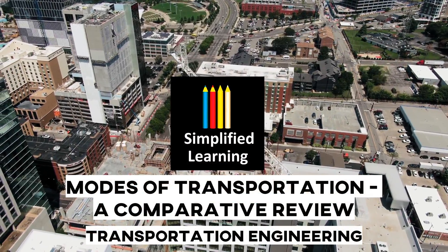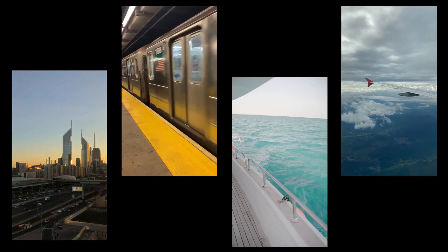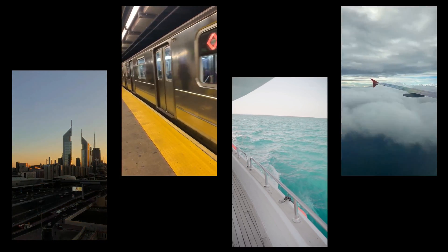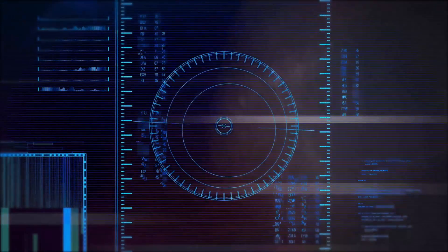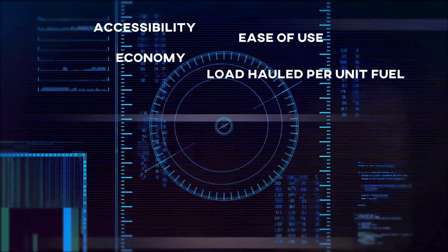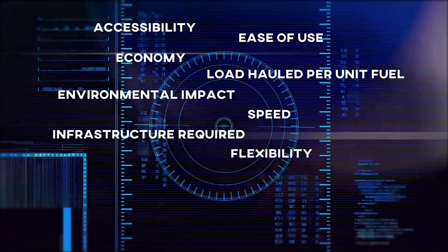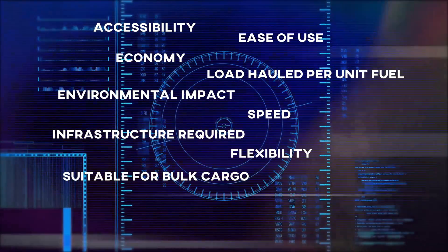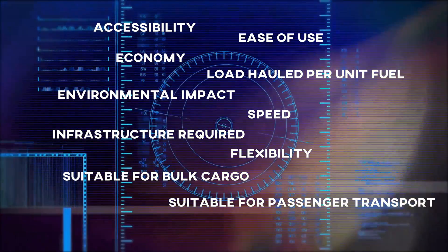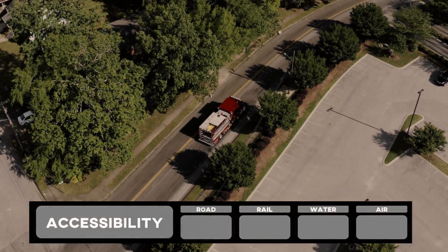Welcome to Simplified Learning. Today we are going to compare four modes of transport: road, rail, water, and air. We will be comparing these modes on the basis of various parameters such as accessibility, ease of use, economy, load hauled per unit fuel, environmental impact, speed, infrastructure required, flexibility, suitable for bulk cargo, suitable for passenger transport, and accessibility in remote areas.